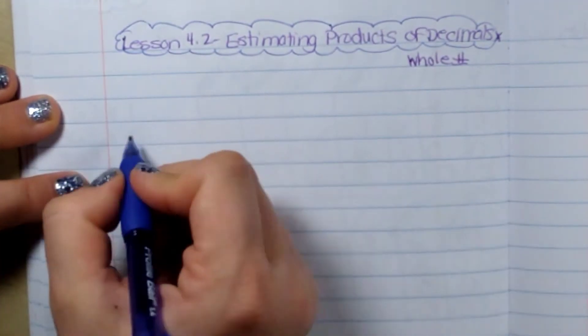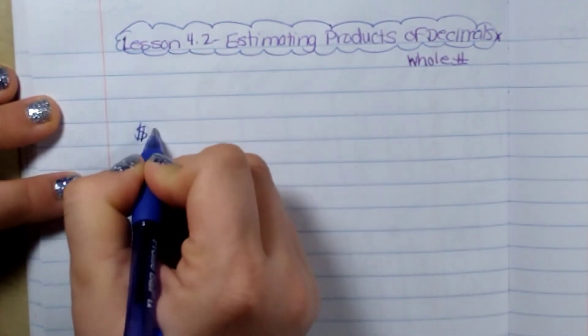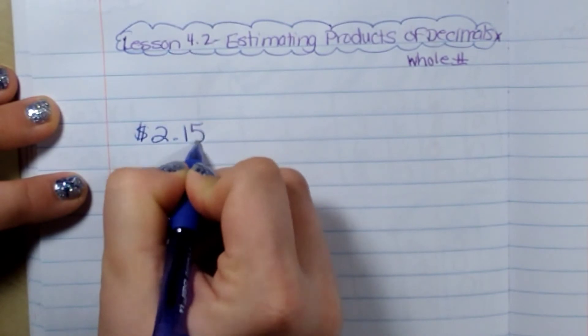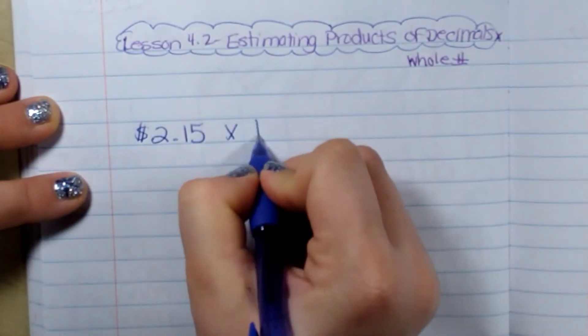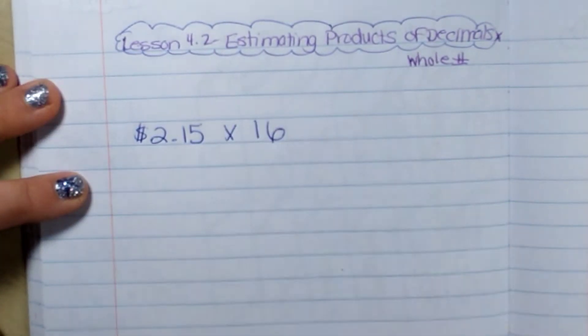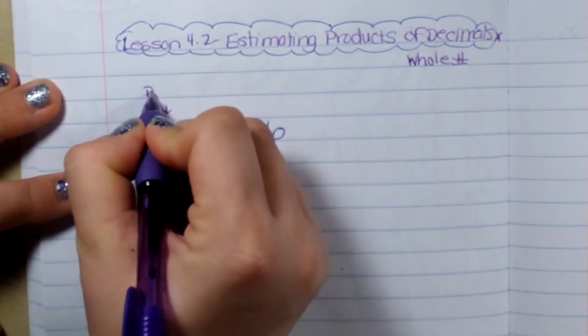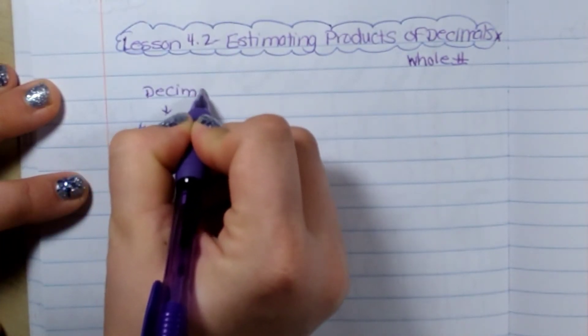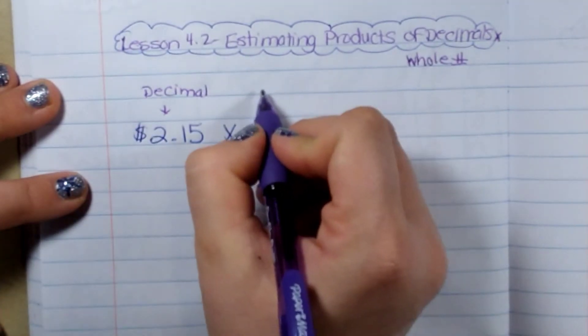So if I was to write, I'm going to pretend like it's money, $2.15 times 16. This would be my decimal. This would be my whole number.